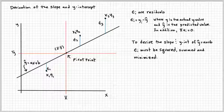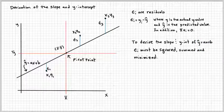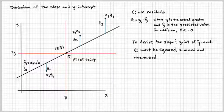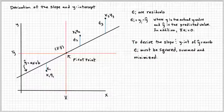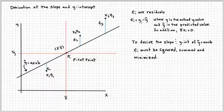And ax plus b, which is over here, a is the slope and b is the y-intercept in this case. So epsilon, all these lines here, must be squared, summed, and minimized to find the best line.